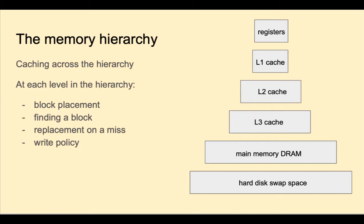The principle of caching works up and down the hierarchy. Some common considerations across the memory hierarchy are where to place blocks, how to find a block, what to replace on a miss, and the write policy. Block placement is determined by associativity: direct mapped, n-way set associative, or fully associative. Higher associativity reduces the miss rate, but increases complexity, cost, and access time.